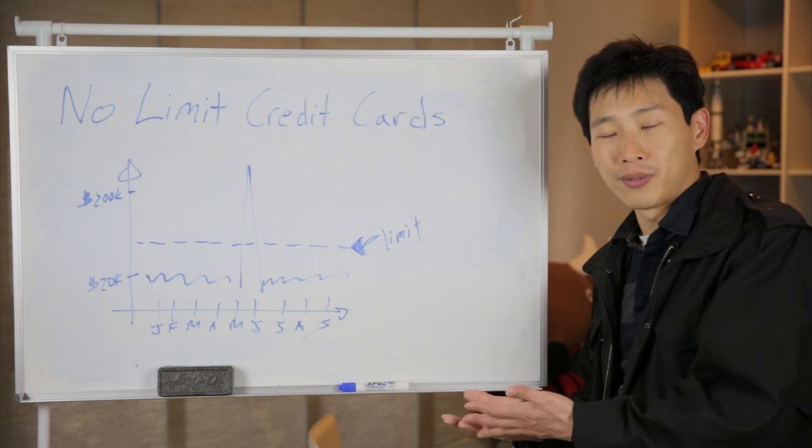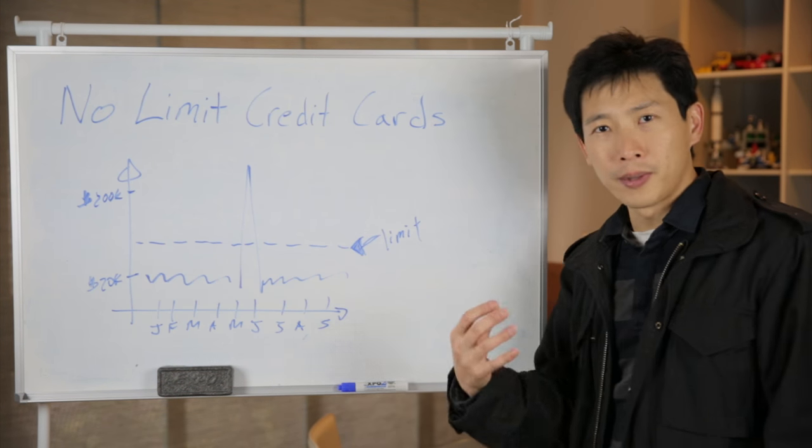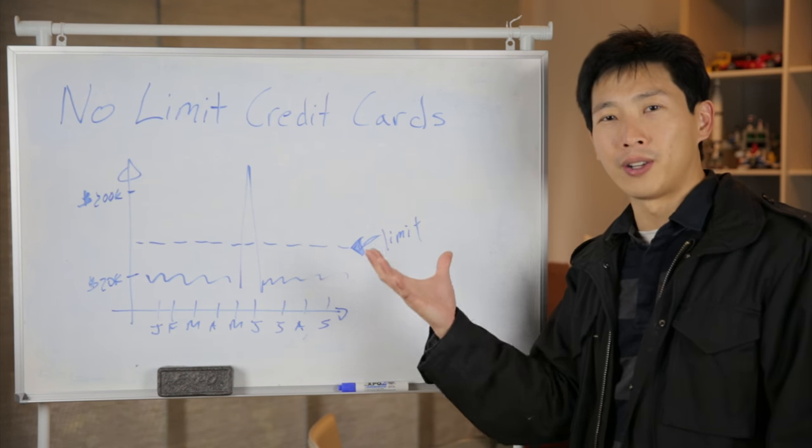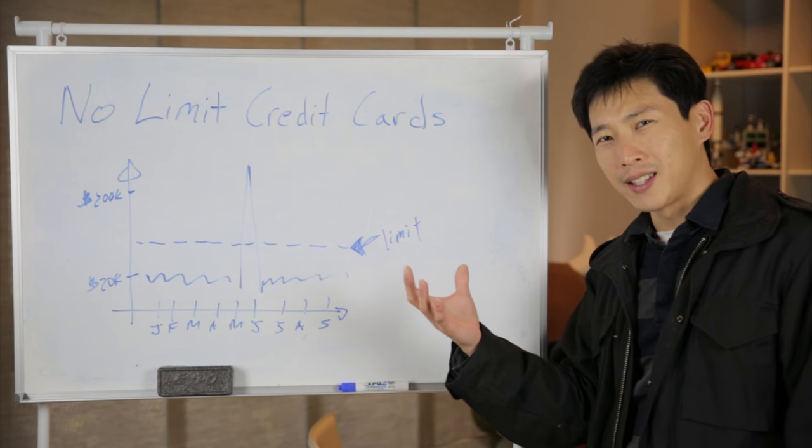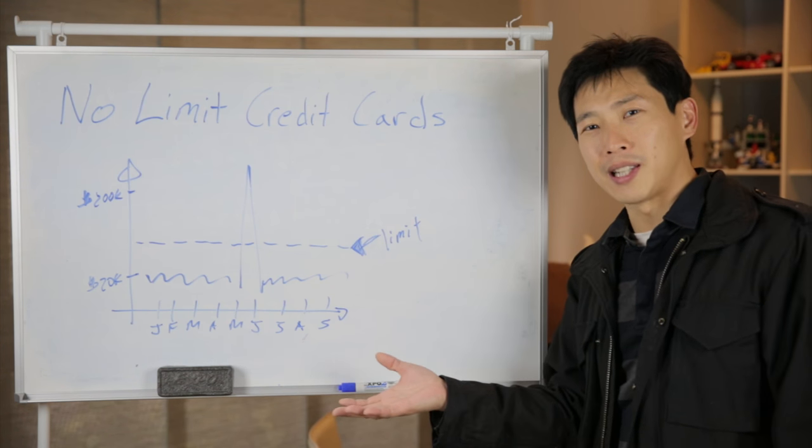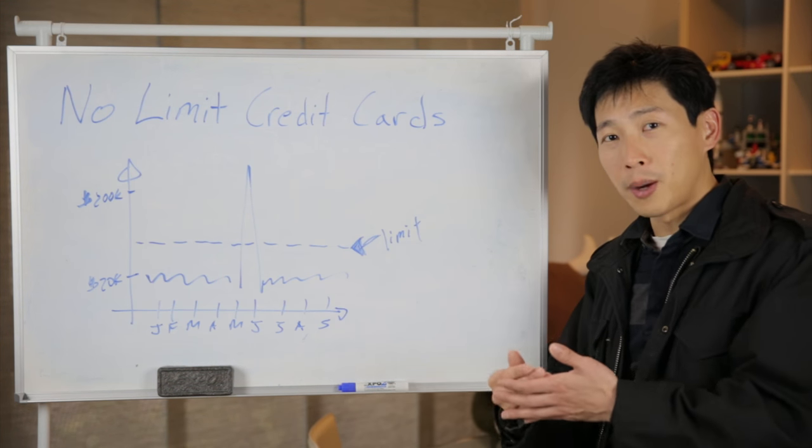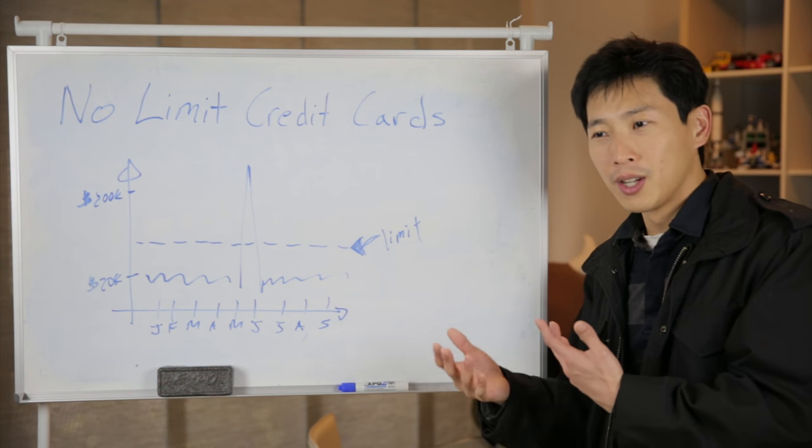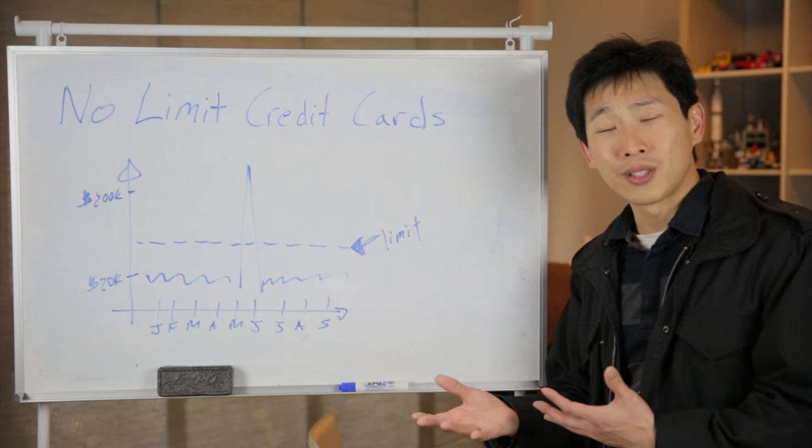Some of these cards like the Amex Centurion requires you to spend something like a million dollars a year. But now I think it's gone down to $250,000 a year. And then on top of this spending, you actually have to pay a yearly fee of something ridiculous like a couple thousand dollars. For the Centurion, I believe it's $2,500.